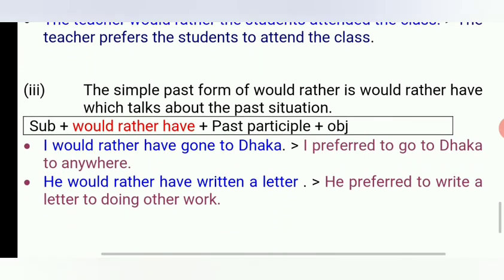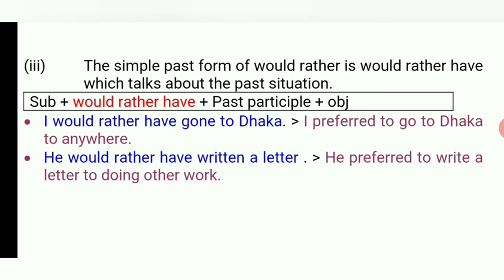Now, the third construction. The past form of 'would rather' is 'would rather have,' which talks about a past situation. Structure: Subject + would rather have + past participle + Object. Example: 'I would rather have gone to Dhaka.' Actually, the meaning of this sentence: I preferred to go to Dhaka rather than anywhere else.